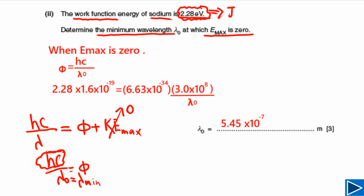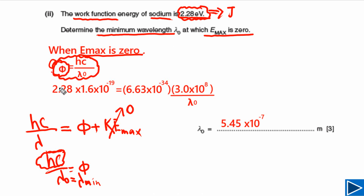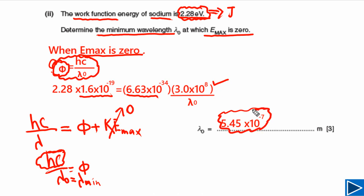The concept is straightforward. Since Emax equals zero, our equation simplifies to hc/λ = φ. We multiply the work function in electron volts by the electron charge to convert it to joules, plug in the values of h and c, and solve to find the minimum wavelength lambda-not.